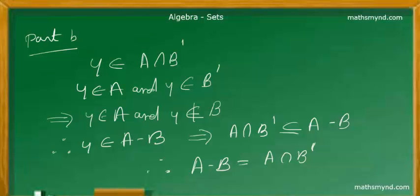Now as I already mentioned in the beginning of this particular section, when a set is a subset of another set and vice versa, we are dealing with equal sets which simply means that we get the conclusion that A minus B equal to A intersection B complement.